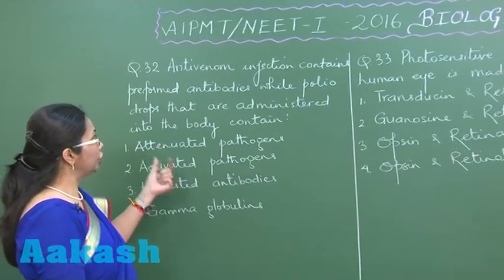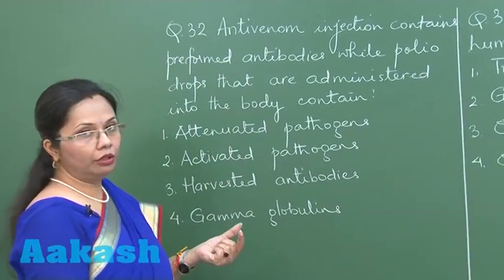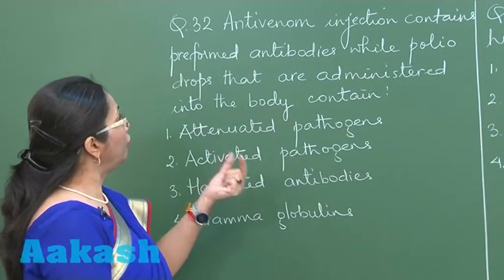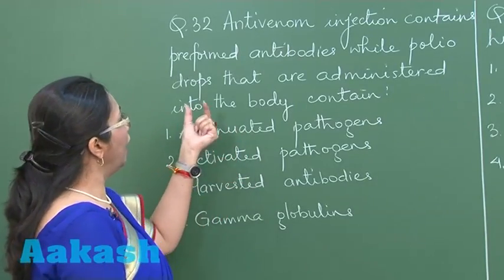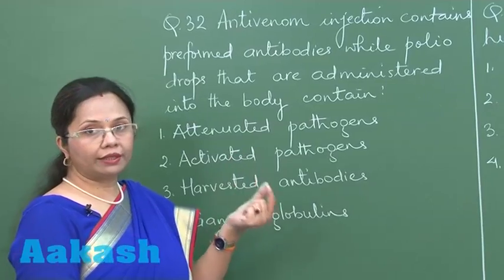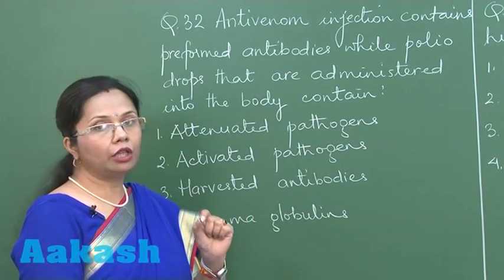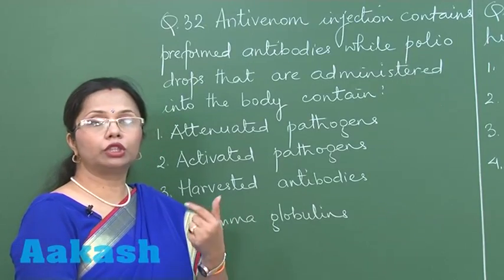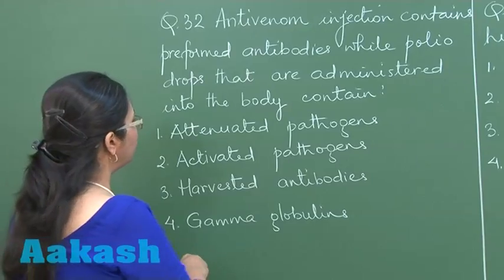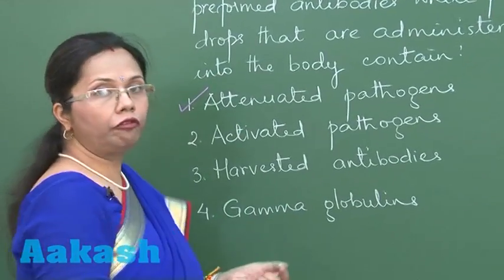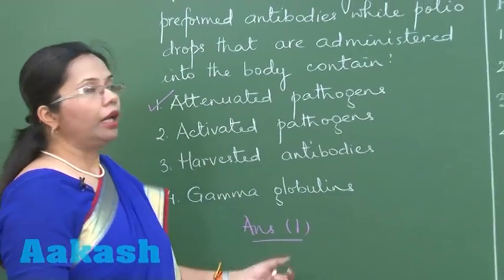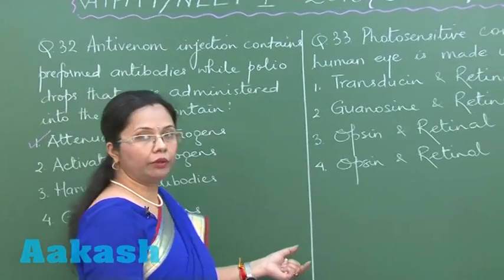In question 32, the antivenom injection given after a snake bite contains preformed antibodies, while the oral polio vaccine administered into the body contains a live virus that has been weakened so it can still stimulate the immune system but is not pathogenic. Such a pathogen is called attenuated — a live but weakened pathogen. So the answer is option 1: attenuated pathogen.